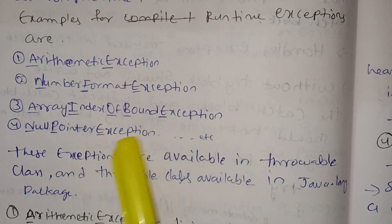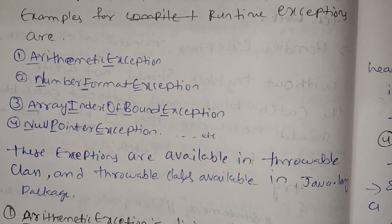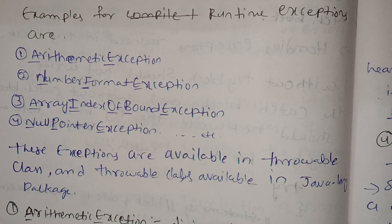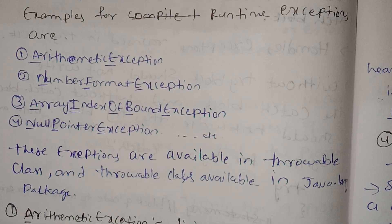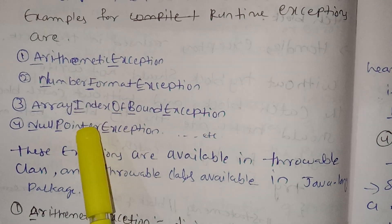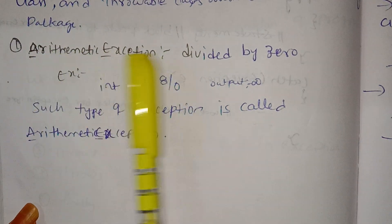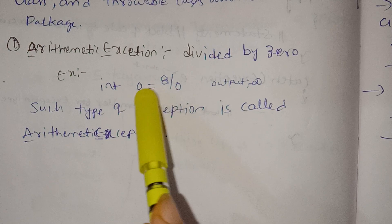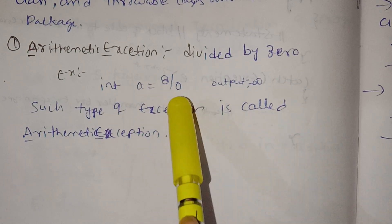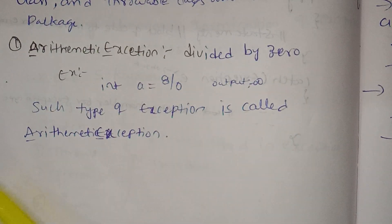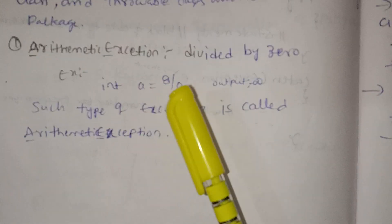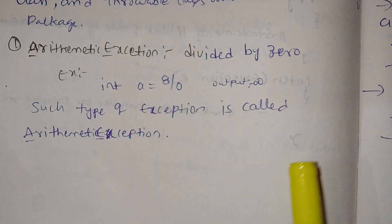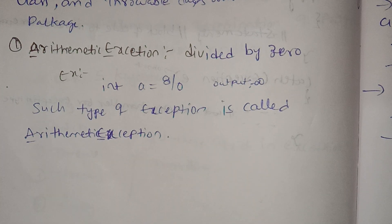I will also explain the null pointer exception, etc. There are a lot of exceptions. Now I will choose the arithmetic exception and write the program. In the arithmetic exception, A and E are capital. Divide by zero: if we have int a and int b=0, then int c = a/b, which is 8 divided by 0. The output will be infinity — this raises an ArithmeticException because it is divided by zero. This type of exception is called the arithmetic exception.